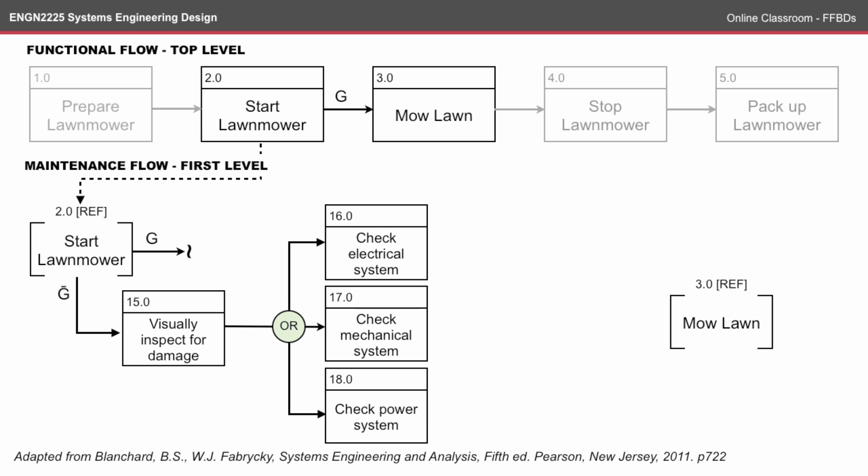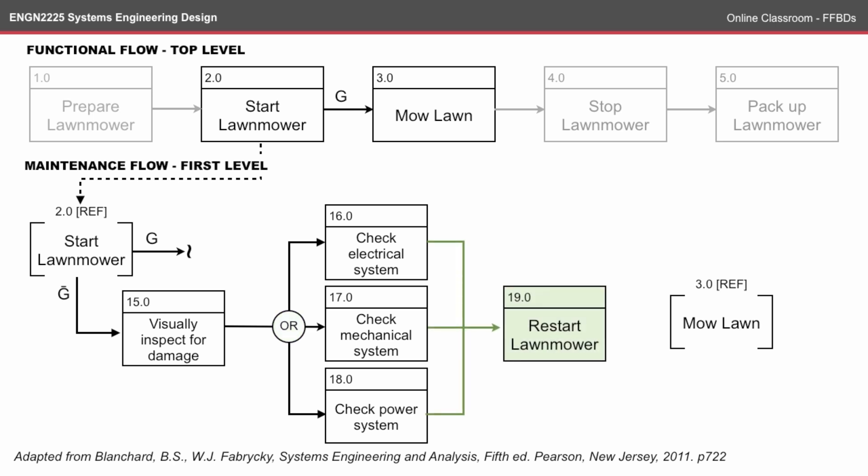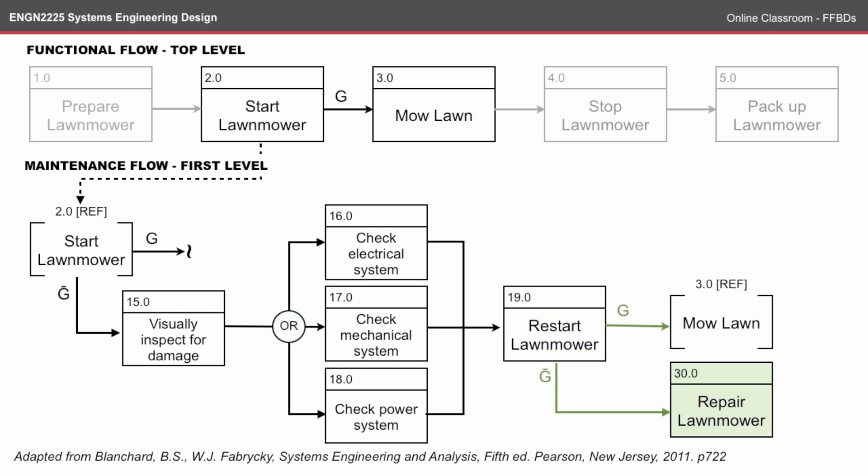Hopefully I can then restart the mower and move on to mow the lawn. Again there's a go/no-go situation: if it works I can mow the lawn, and if it doesn't I might need to take further action and repair the lawnmower. This might be a second-level maintenance flow, or it might simply be a directive to take it to my local service centre. So here we have a completed maintenance flow diagram explaining what happens if the lawnmower doesn't start.